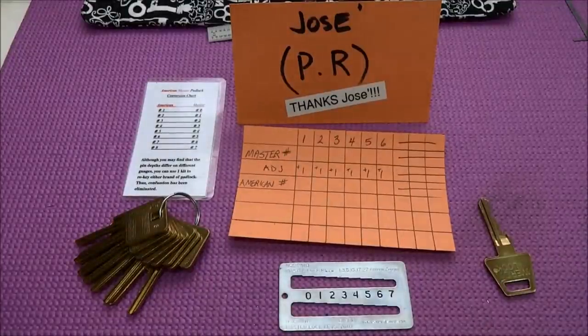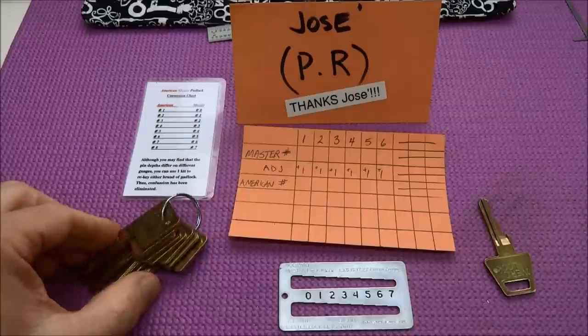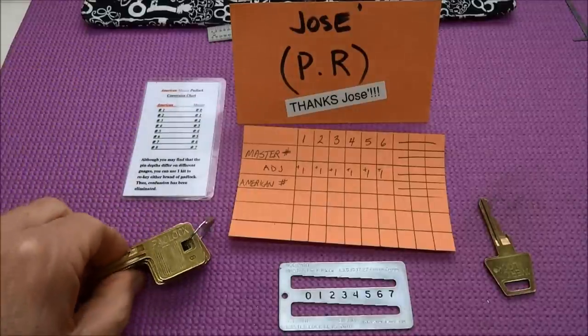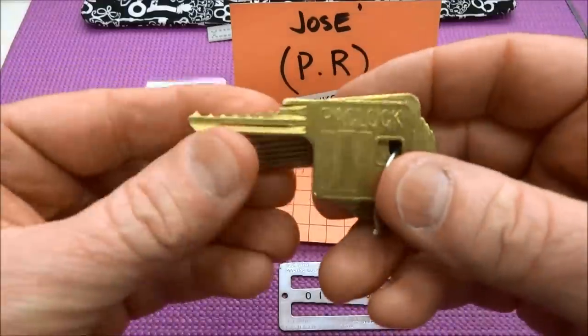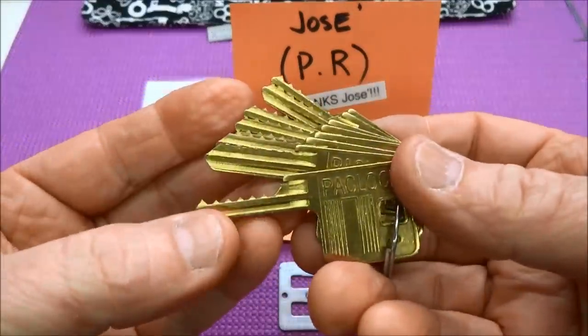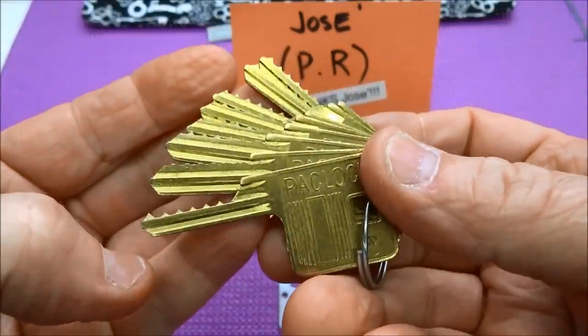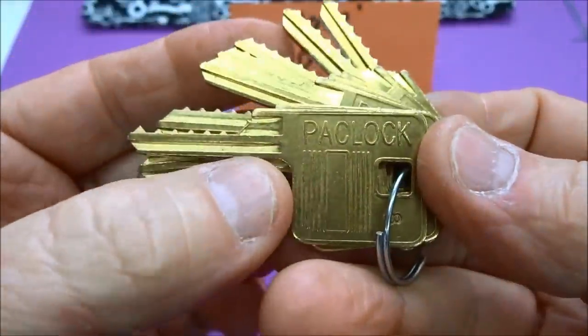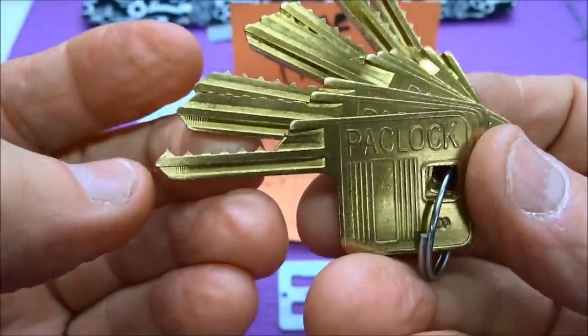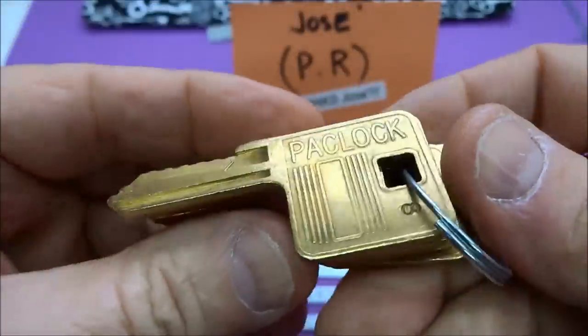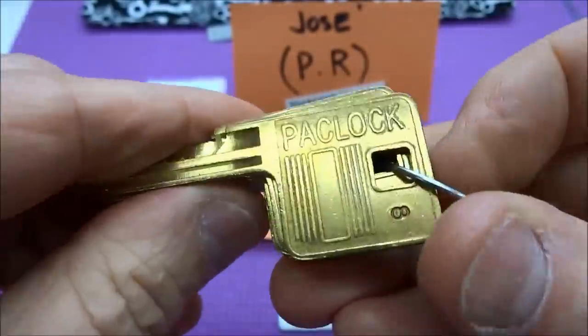Hey guys, let's talk about a poor man's code cutting machine. I can't afford a code cutting machine, but Jose in Puerto Rico was kind enough to send me a complete set of depth and space keys. This is for an American lock on a padlock key, but it's the same as the AM7, the six pin American padlock.